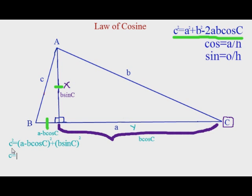And I'll add on my little twos later, because there's no two on here that I can use to add in. So c squared is equal to a squared minus 2ab cosine c plus b squared cosine squared c plus b squared sine squared c.